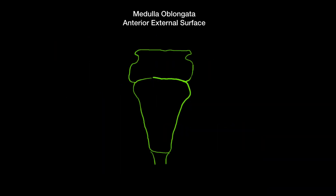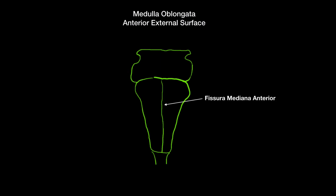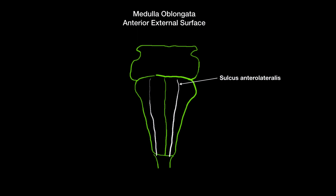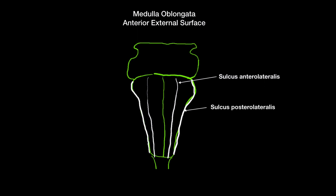Let's go ahead and look at the anterior external surface first. Here we have the anterior surface of medulla oblongata, with pons up here and the spinal cord down here. The first structure I want to highlight is the fissura mediana anterior, located in the middle. On either side of it you can have the sulcus anterolateralis, and going even more laterally you can have the sulcus posterolateralis.